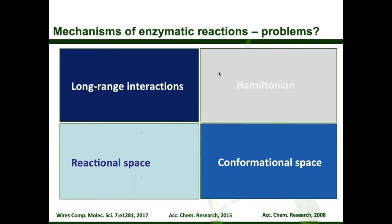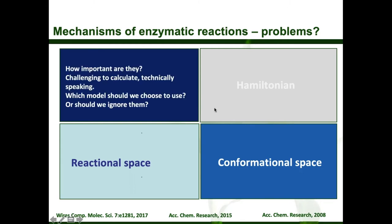Now, long-range interactions. How important are they? We know they are challenging to calculate — which model should we use? In an enzyme the long-range interactions are many and can extend from 7 to 20 Ångström, so we have to be careful with them.